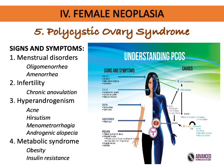Signs and symptoms of PCOS include menstrual disorders such as oligomenorrhea or amenorrhea, infertility due to chronic anovulation caused by the presence of many cysts, increased androgen activity leading to possible acne and hirsutism, menometrorrhagia, androgenic alopecia, and metabolic syndrome such as obesity and possible insulin resistance.